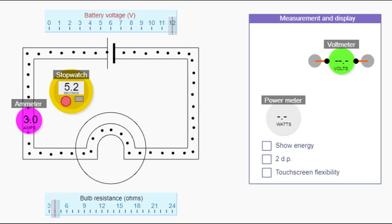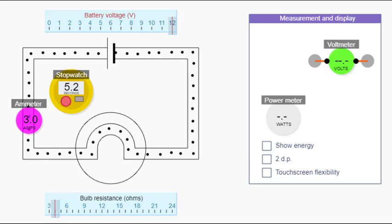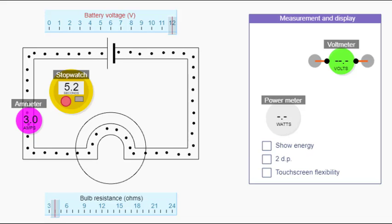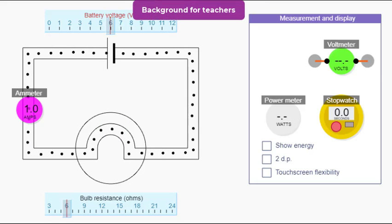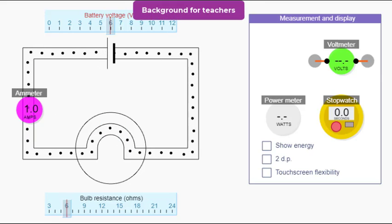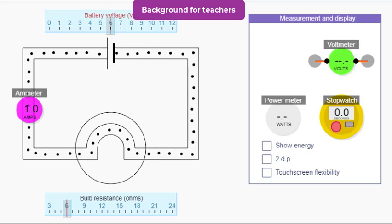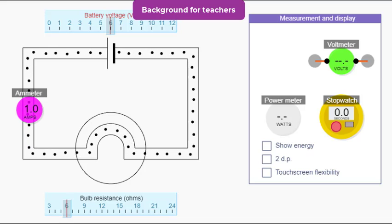So we have a useful equation: charge flowing past a point equals current times time. We used our simulation to calculate charge, but we can also use it to calculate current.